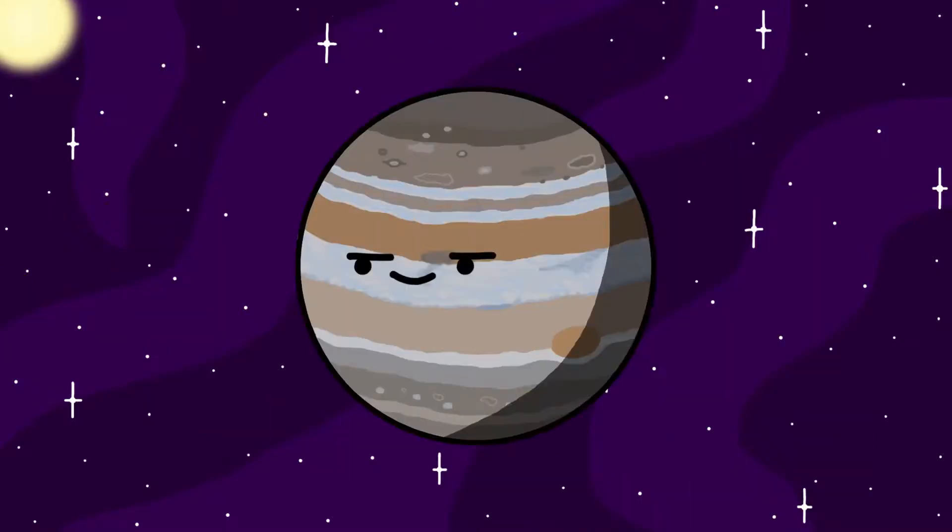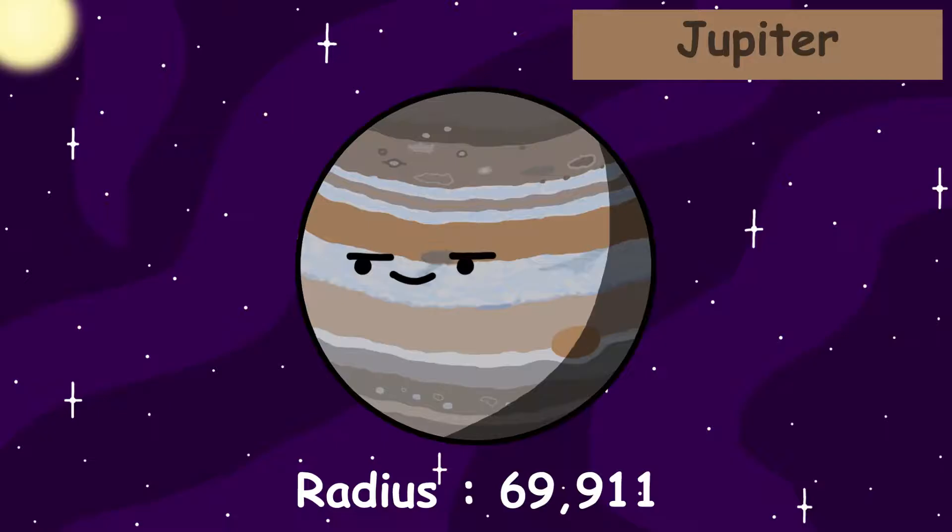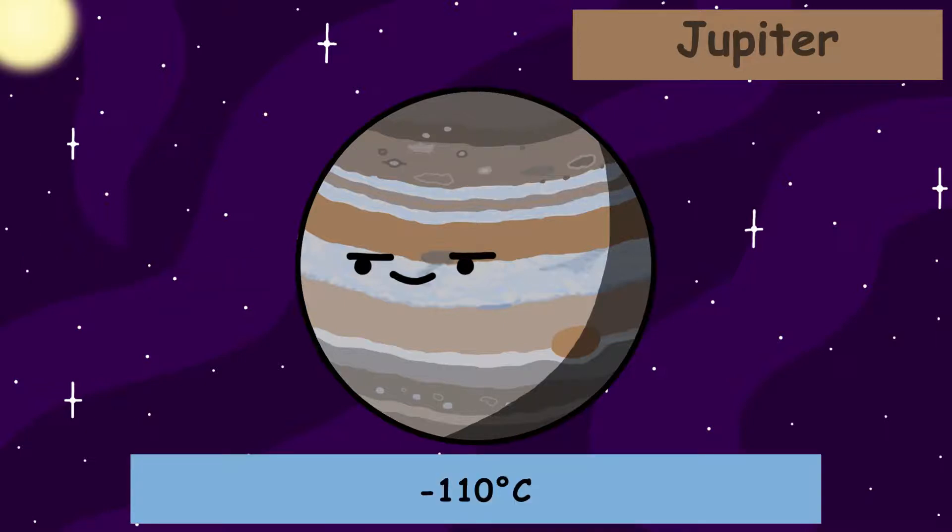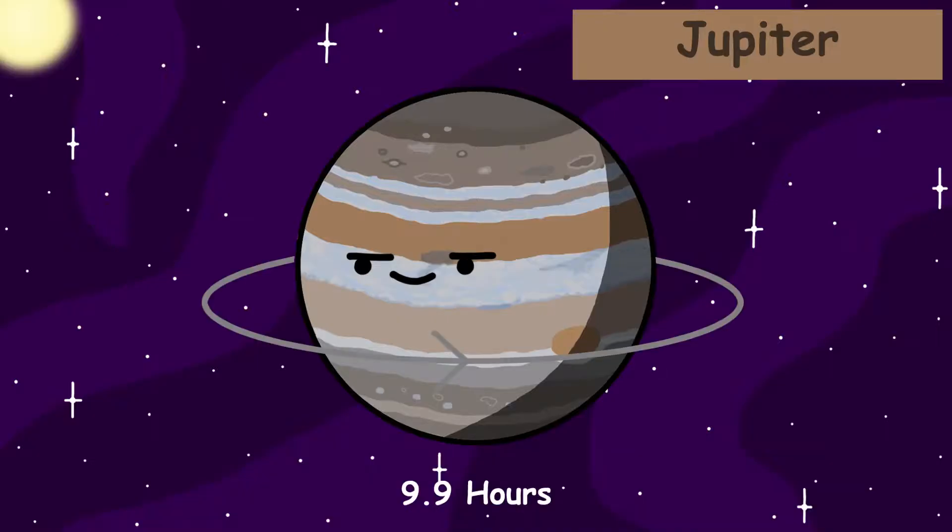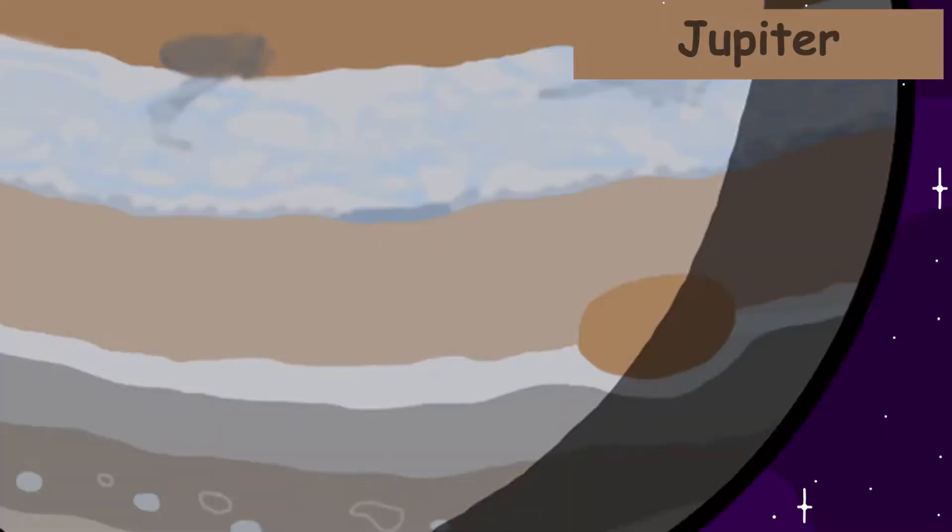After the asteroid belt, we arrive at Jupiter. Jupiter has a radius of 69,911 kilometers, making it the largest planet in the solar system. The top cloud layers of Jupiter are about negative 110 degrees Celsius cold. It takes Jupiter only 9.9 hours to rotate once, meanwhile 11.9 years to orbit the sun once. Jupiter is known for its great red spot.